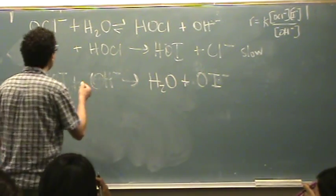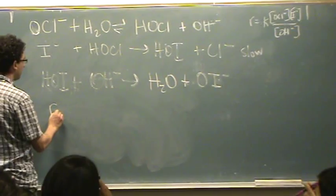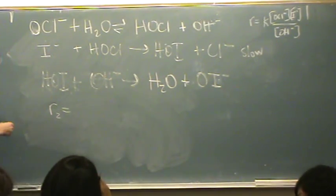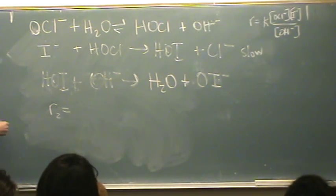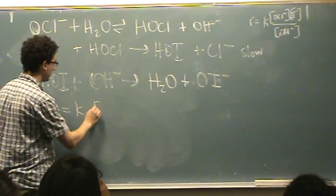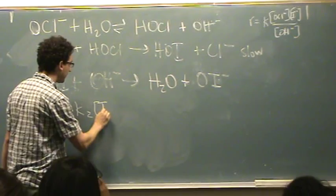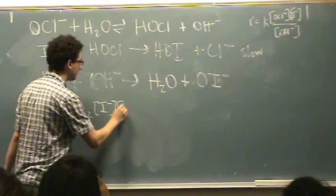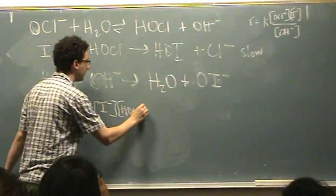So we want to write it for the slow step. Rate 2 is the slow step, it's labeled, the other two are labeled fast. That's K2 times I minus, times HOCl.